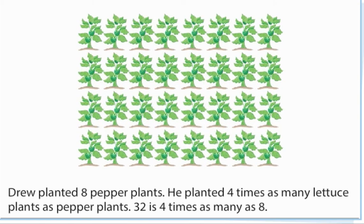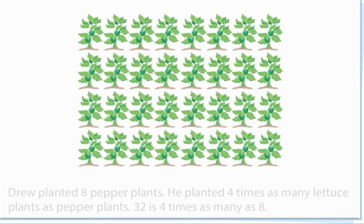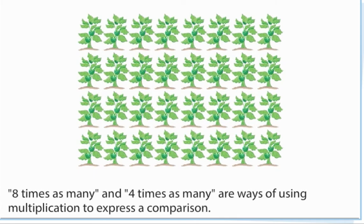Drew planted eight pepper plants. He planted four times as many lettuce plants as pepper plants. 32 is four times as many as 8. Eight times as many and four times as many are ways of using multiplication to express a comparison.